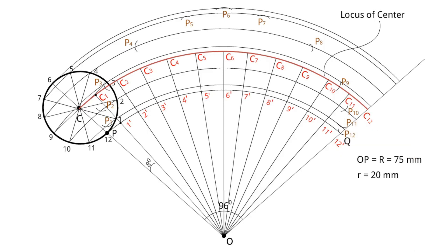Join a smooth curve with free hand by joining the points P1 to P12.